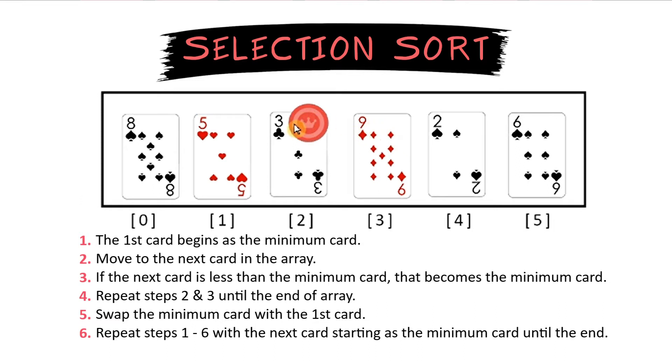We check 9. 9 is not less than 3 so the minimum marker stays. But then we check 2. This is smaller than 3 so now this is the new minimum. Then we move to the next card, check the 6. It's not less than 2 so that means 2 was the smallest number in the array and we swap that with the very first item in the array which was an 8.